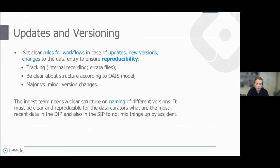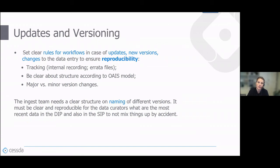It is clear that you need rules for workflows in case you get updates and new versions. You need to ensure reproducibility of all steps you've done, track steps in internal coding and errata files for re-users so they can understand what happened. Be clear about the structure according to the OAIS model — where do you treat data in the AIP folder versus SIP — and decide on major versus minor version changes.